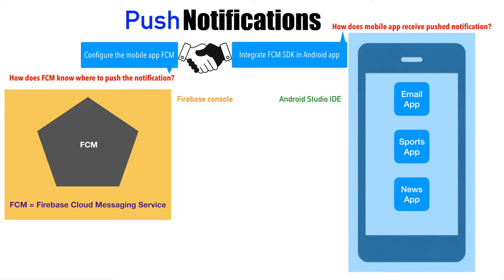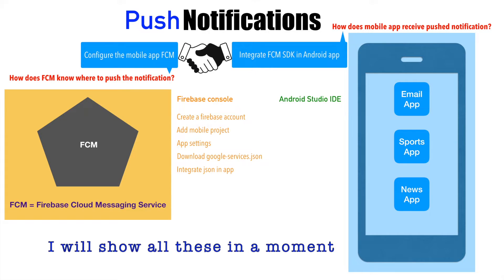Let us now concentrate on what you need to do on the Firebase console. First of all, you need to have a Firebase account — you can search on Google for Firebase, and if you don't have an account, you can create one; it is free of cost. Once you create the Firebase account, the next step is to add the mobile project and then configure certain settings for that project in the Firebase console. When you do all that, what you basically get is a downloadable file called the GoogleServices.json file.